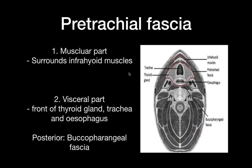The next fascia is the pretracheal fascia, which is divided into two parts: the muscular part and the visceral part. The muscular part surrounds the infrahyoid muscles. The visceral part lies in front of the thyroid gland, the trachea, and esophagus. And the buccopharyngeal fascia, which I mentioned earlier as covering the backside of the pharynx, is visible here on the posterior side.